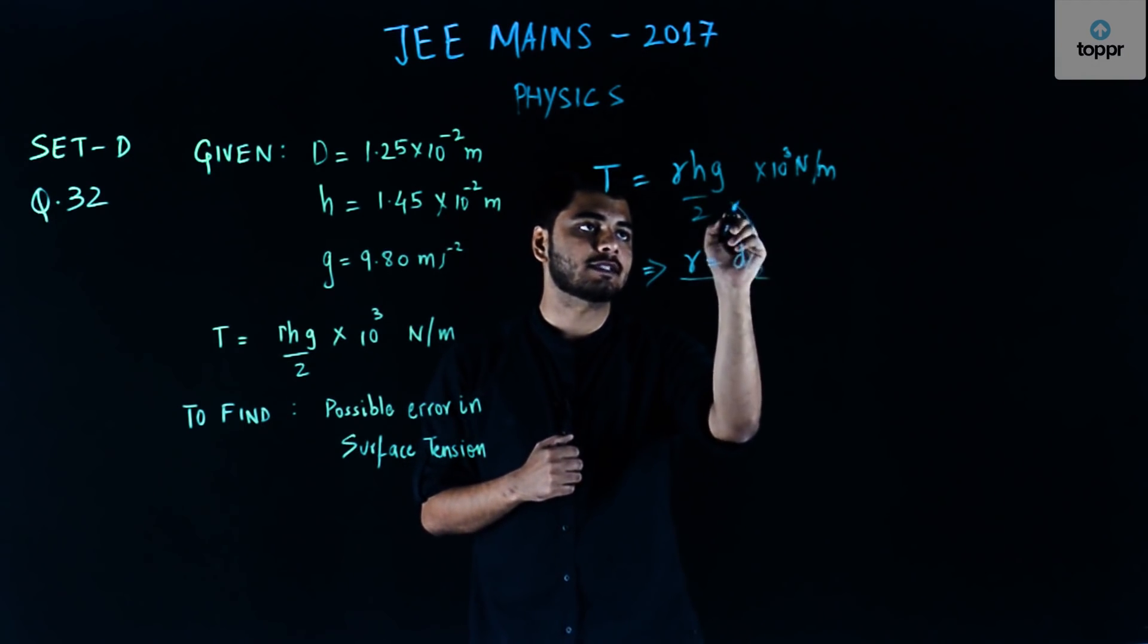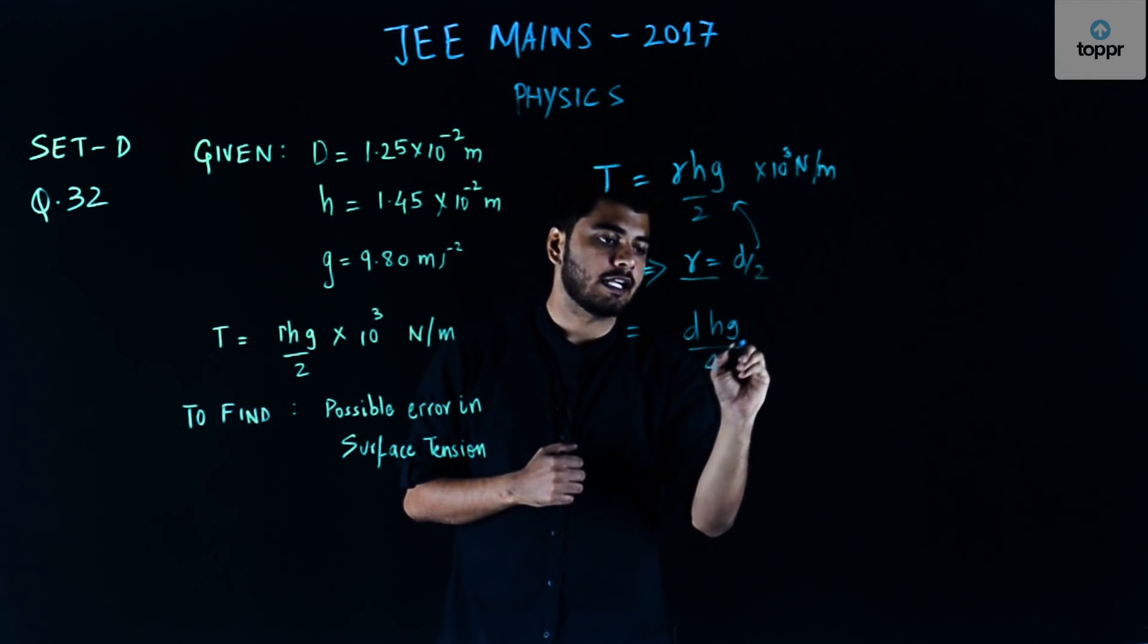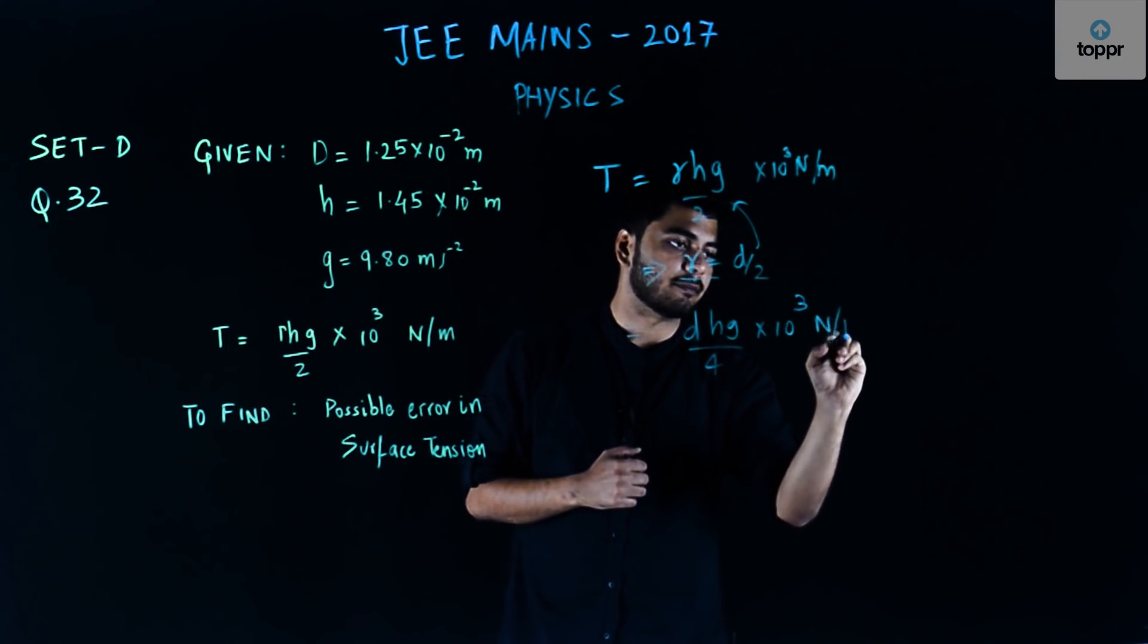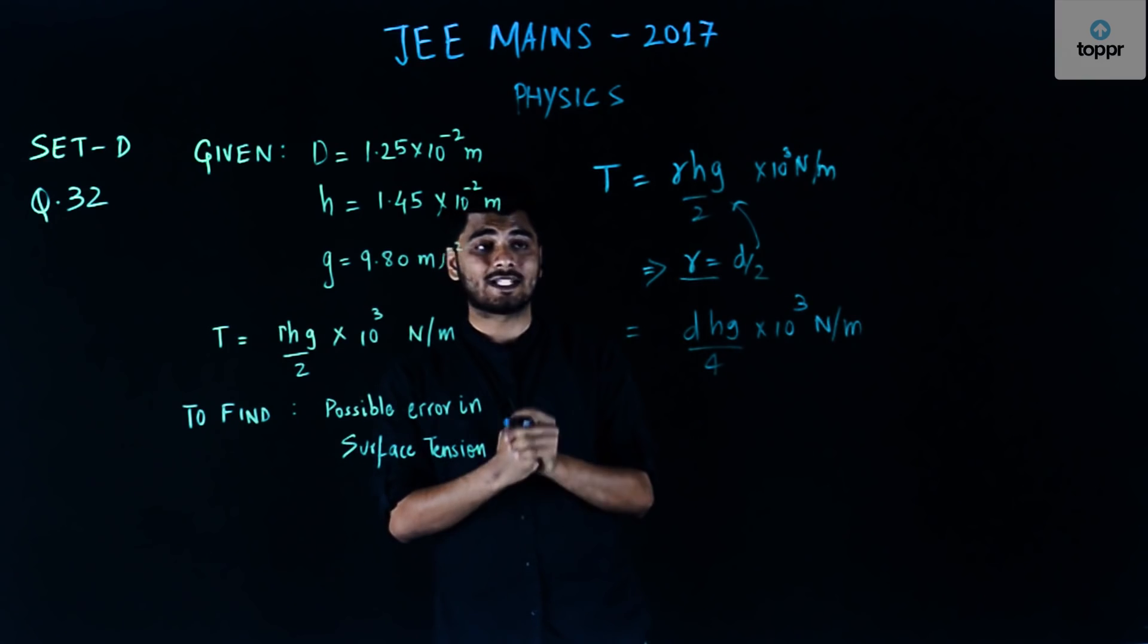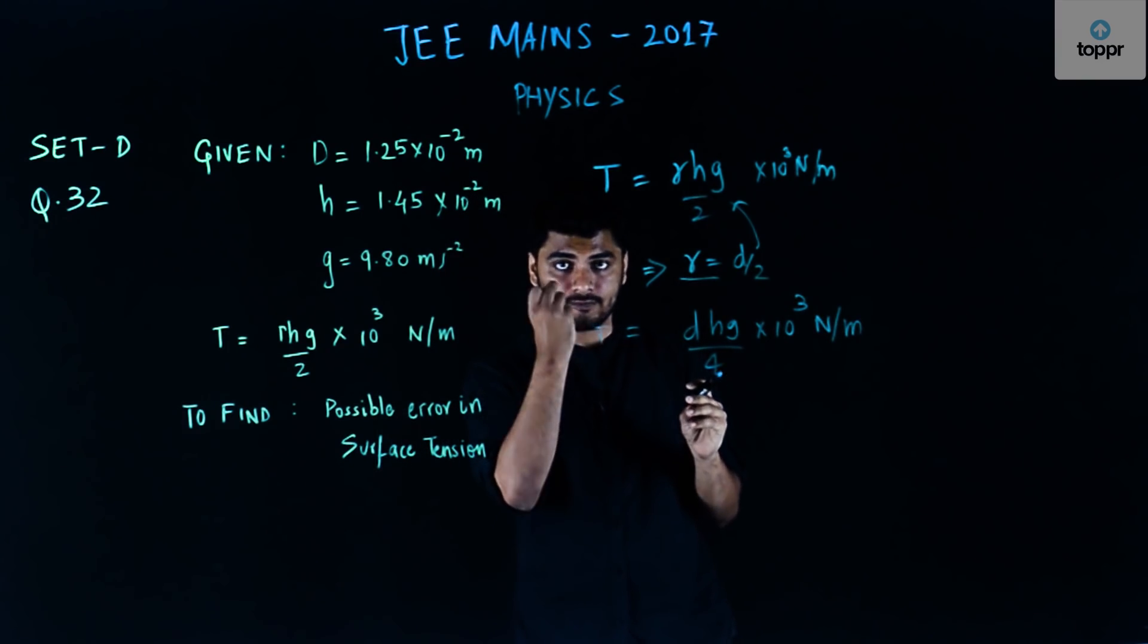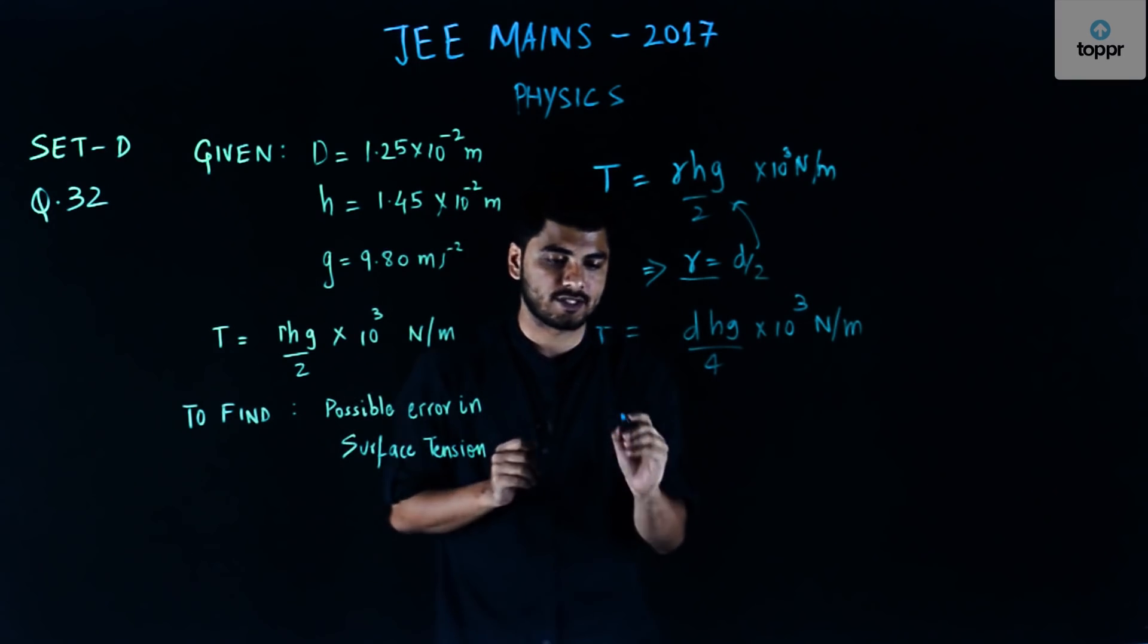So using this in this particular formula, I get DHG by 4 into 10 to power 3 Newton per meter. Now what I need to do is, as we know that in order to find the value of the error in a particular expression, we need to use log on both sides.